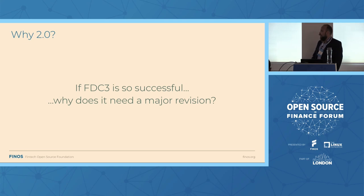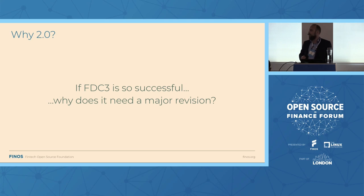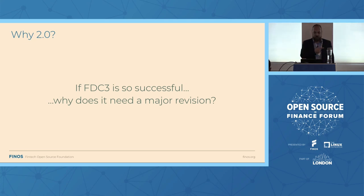So you might ask: if FDC3 is so successful, why did it need a major revision? By major revision, I mean we're rolling that first digit of the version number, which is conventionally done when you're breaking something — making breaking changes that other people are going to have to adapt to, which is something you try, particularly as a software vendor, to do very carefully. There are a few reasons why it was necessary, and Rico's going to help us out with some of those in a minute by looking at FDC3's history and how we got to where we are.